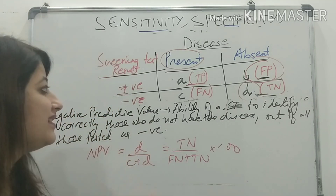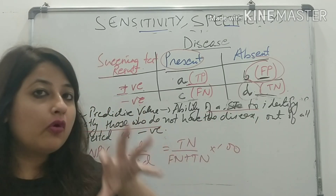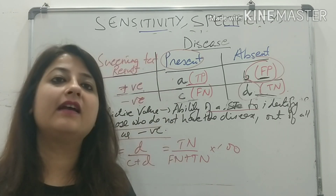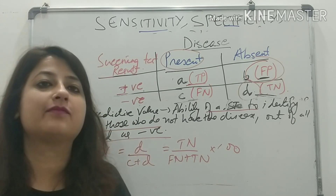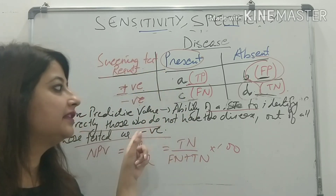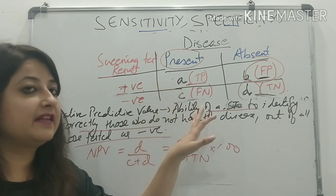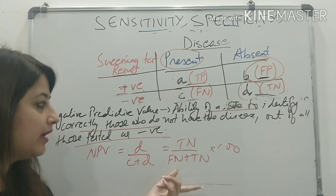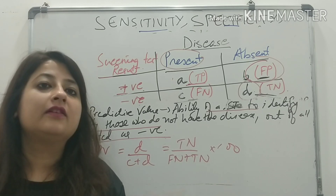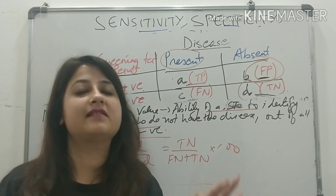The last parameter is negative predictive value. It is simply the ability of a screening test to identify correctly those who do not have the disease out of all those tested as negative. All those who tested negative by a screening test and do not actually have the disease is given by NPV. So it is D upon C plus D into 100, or true negative upon false negative plus true negative into 100.